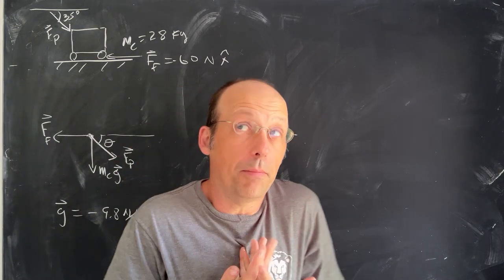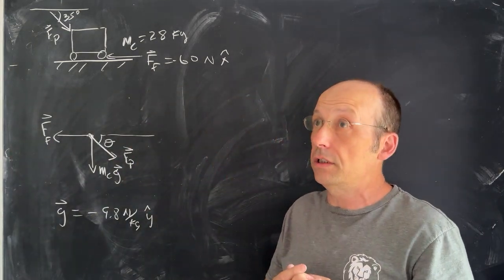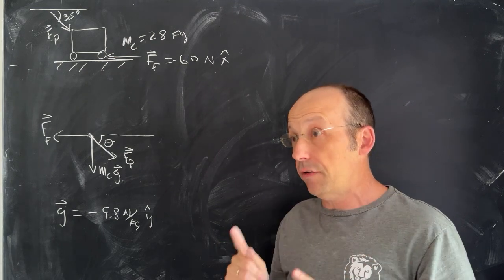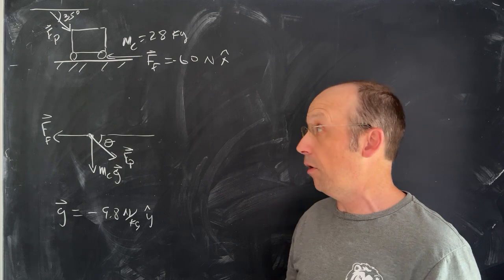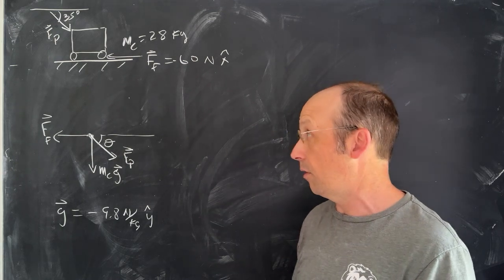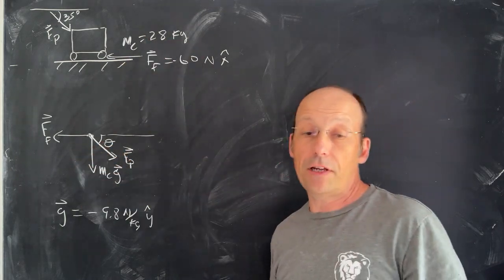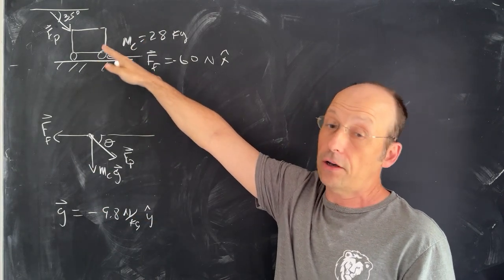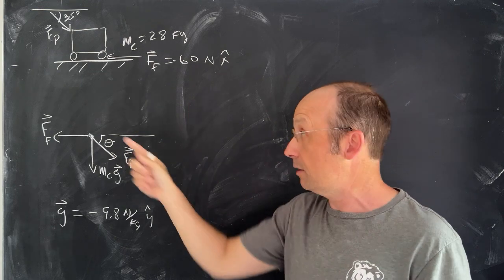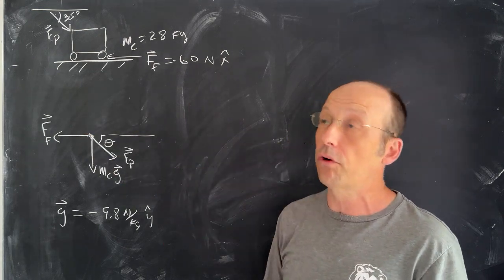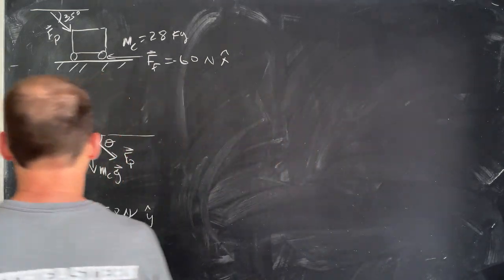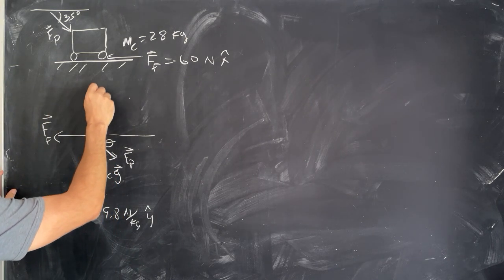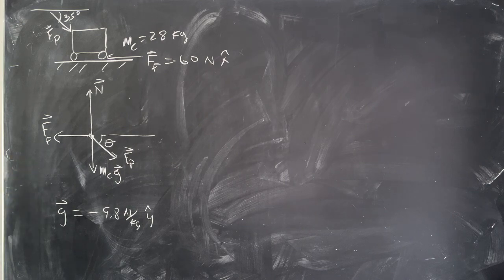Now you can see that we have a problem. If those are the only forces and it's moving at constant velocity, constant velocity means acceleration is zero and the net force has to be zero. There's no way the net forces are zero because there's nothing pushing up in this diagram. We need an upward force — the interaction force between the floor and the cart. There's friction and the normal force, which is perpendicular to the surface. So we do have another force of constraint. That's my free body diagram.